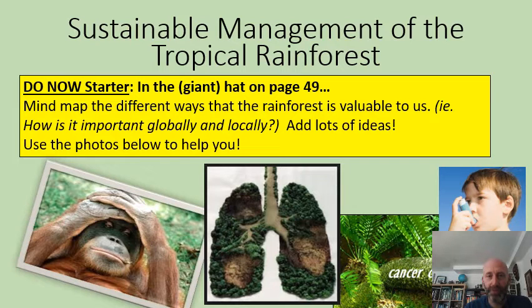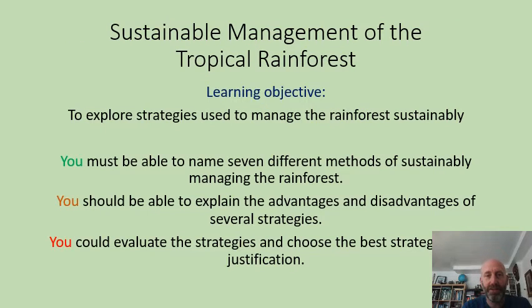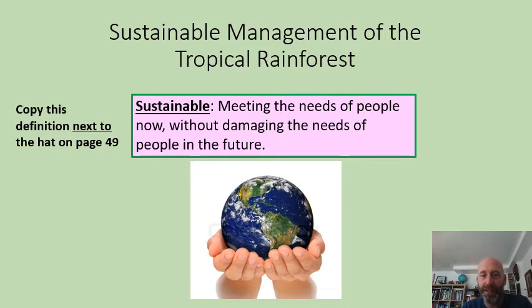Once you've done that, we're going to look at how we can manage the tropical rainforest sustainably. We'll look at some different ways you can do that, think about the advantages and disadvantages of the different strategies, and try to think which might be the best one. First of all, we're going to remind ourselves what sustainable means, and if you could copy down this definition next to the top hat on page 49. Remember: sustainable is all about meeting the needs of people now without damaging the needs of people in the future.